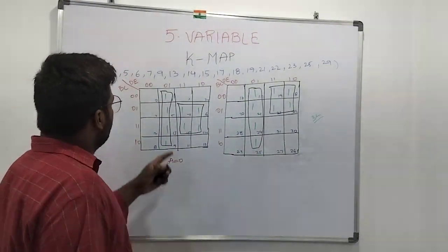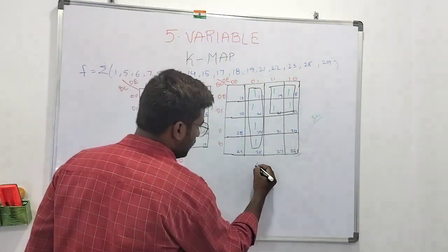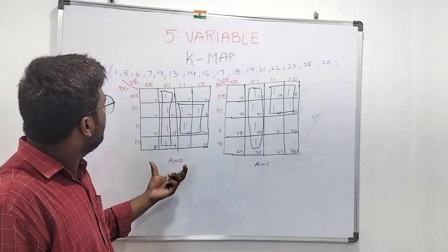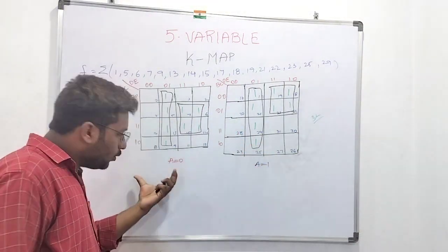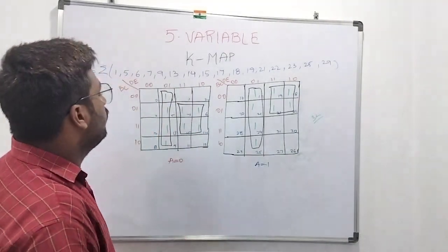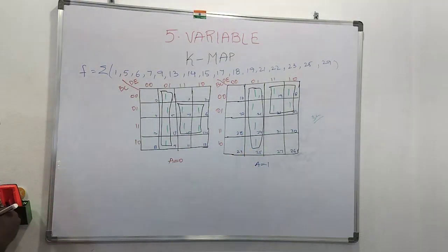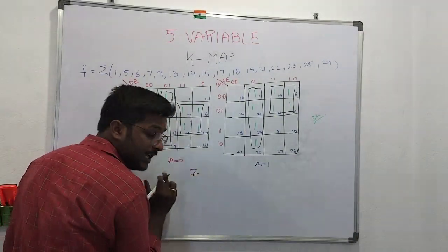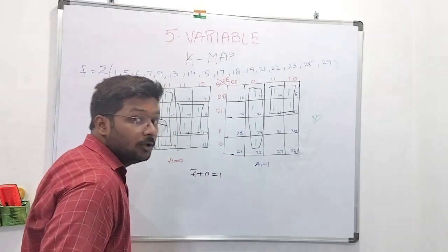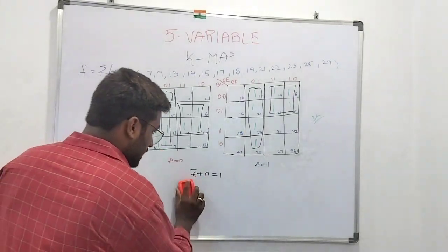Let's go into the question and begin solving the five-variable K-map step by step.